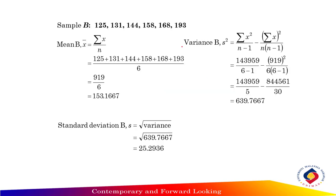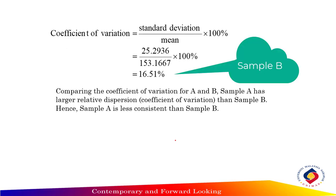Next for sample B, the same thing. Find the mean and variance and then find the standard deviation. 153.1667 for the mean and standard deviation equals 25.2936. So the coefficient of variation equals 16.51%.